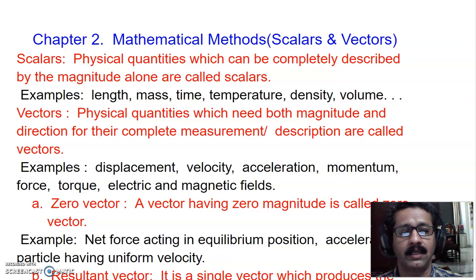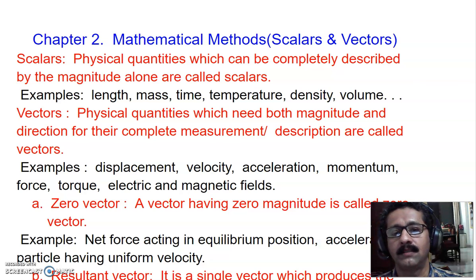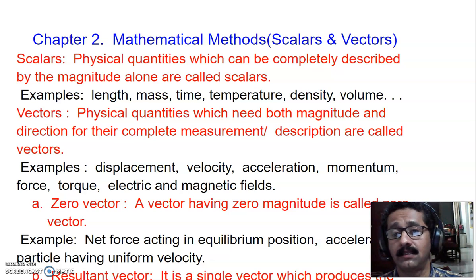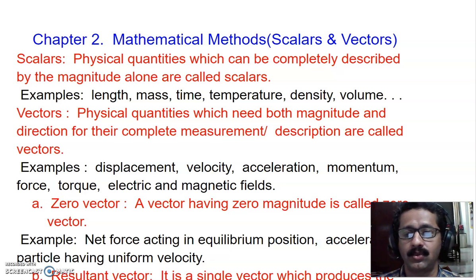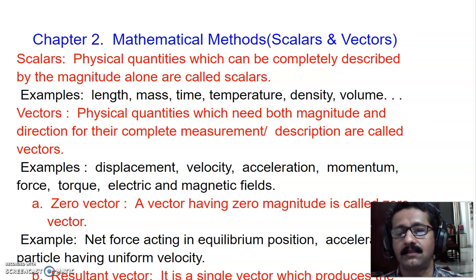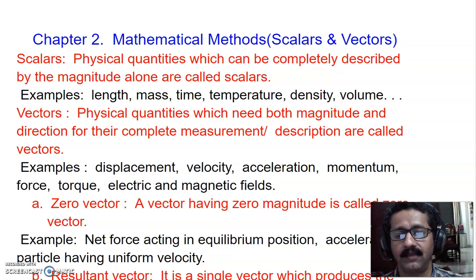Acceleration is also a vector physical quantity. Others include momentum, force, torque, electric current, electric fields, and magnetic fields — there are many such quantities. In most problems involving force, only the magnitude is given, and we take direction from context. But in reality, for vector quantities, one must correctly state both the direction and the magnitude.